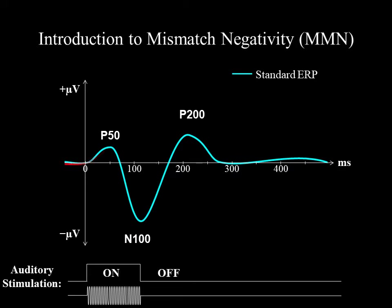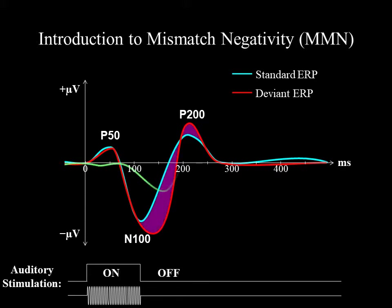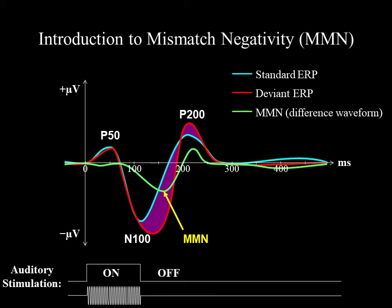In red here is the ERP response to a deviant sound, which is physically different from the standard and played infrequently and unexpectedly. Subtracting the standard ERP from the deviant ERP produces a negative peak which is known as mismatch negativity or MMN. This review concerns theories that explain this difference.